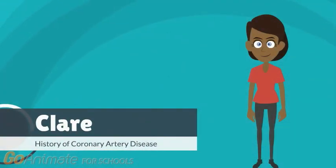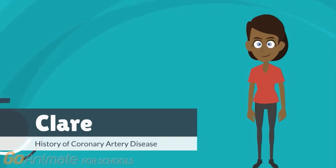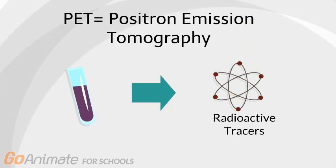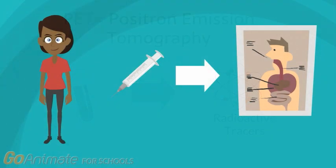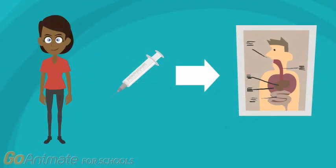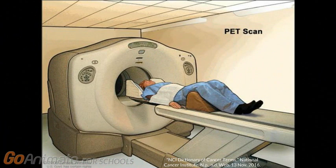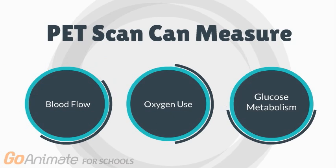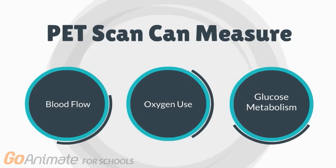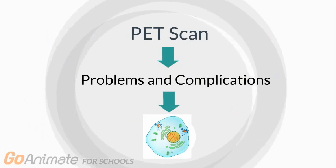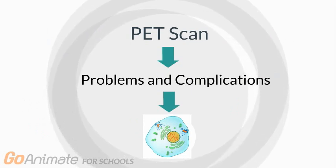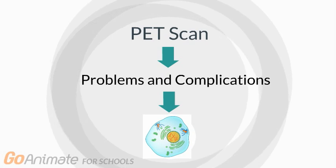Finally, meet Claire. Claire has a history of coronary artery disease, so her doctor advises her to undergo a PET scan. A positron emission tomography scan is performed by using a special dye that has radioactive tracers. The patient injects this tracer and it is subsequently absorbed by organs and tissues in the body. The PET scanner can highlight these tracers and see how well organs and tissues are performing. PET scans can therefore measure blood flow, oxygen use, and glucose metabolism. A major difference between PET scans and the two previous scans is the ability of a PET scan to show problems and complications at a cellular level.